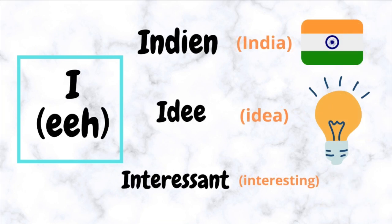I — pronounced as 'ee.' For example: Indian, Eday, Interessant.